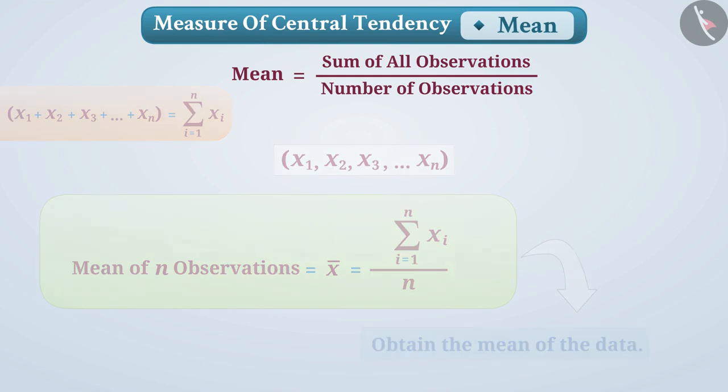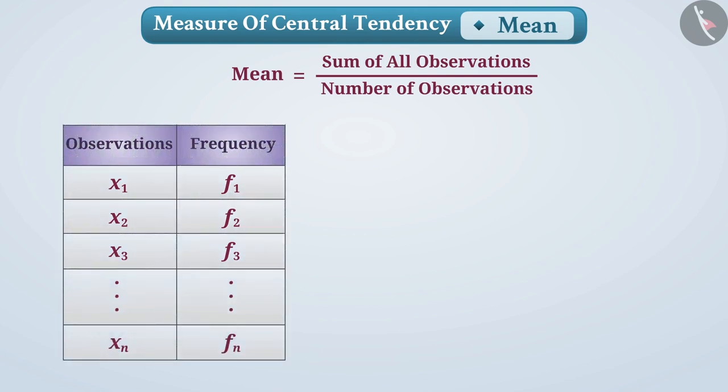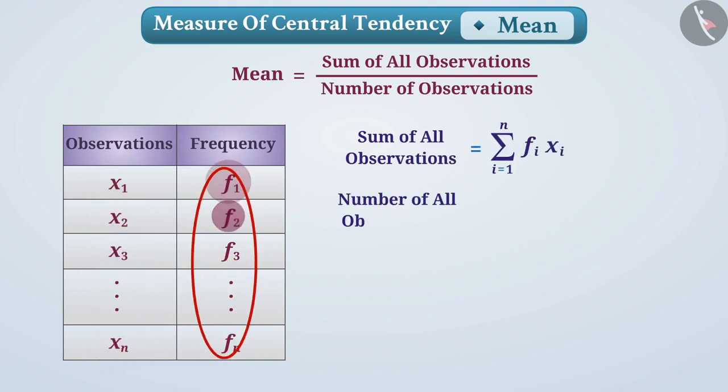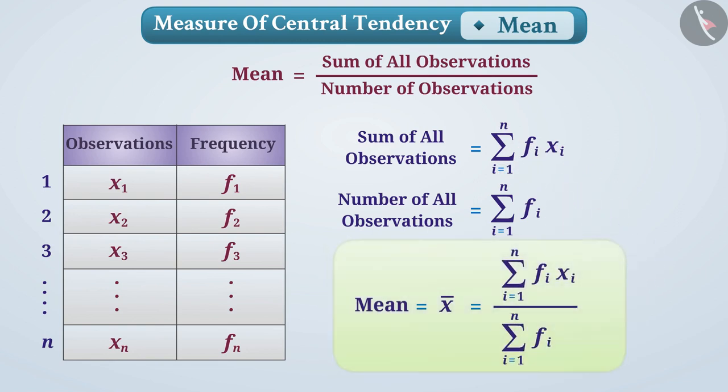Consider that in observations, frequency of x1 is f1, x2 is f2, x3 is f3, similarly xn is fn. Then we can get the sum of all observations in this way and the number of all observations in this way. Remember that here n represents the total number of observations. Now the mean of these observations can be written in this way.